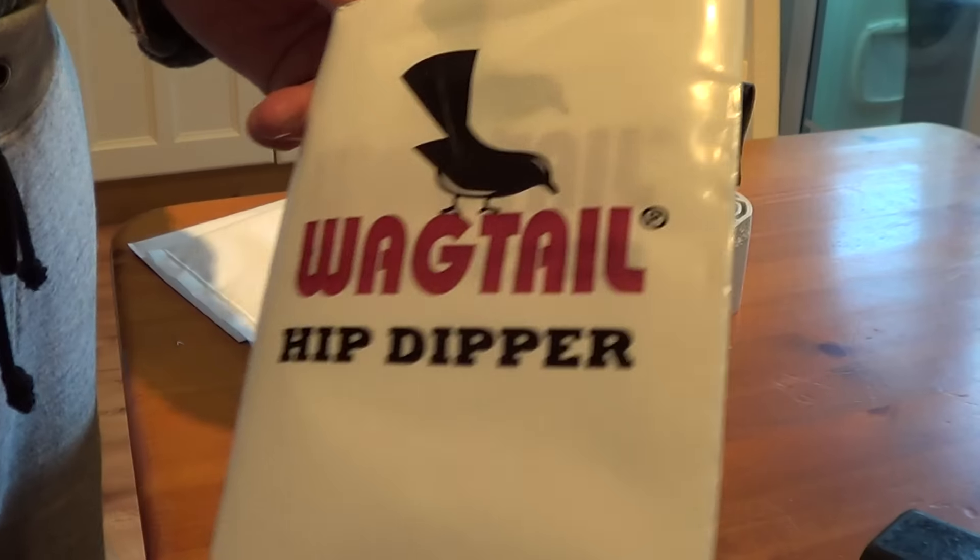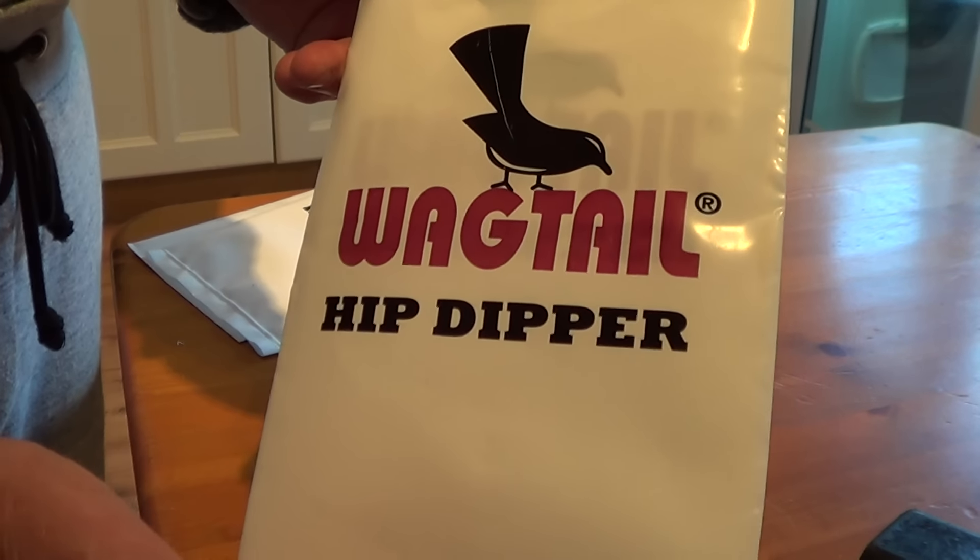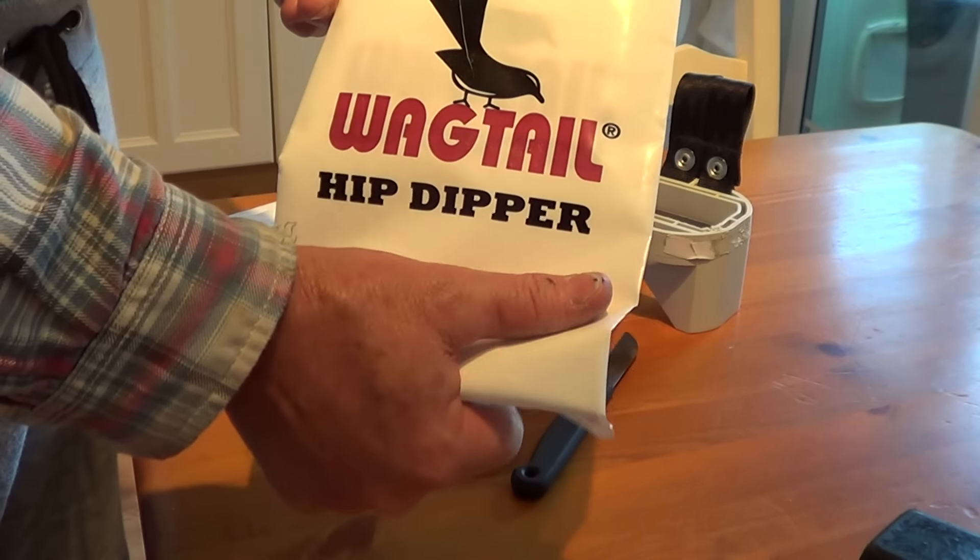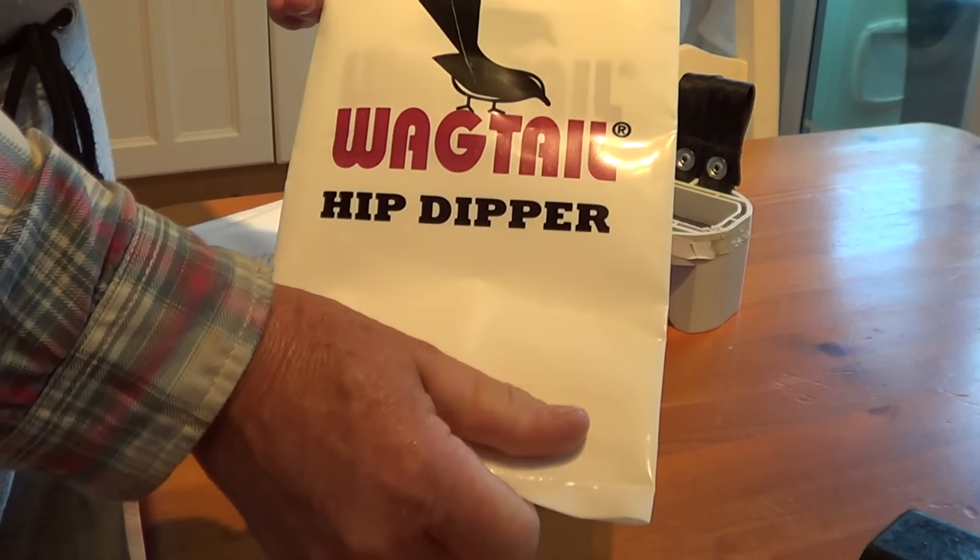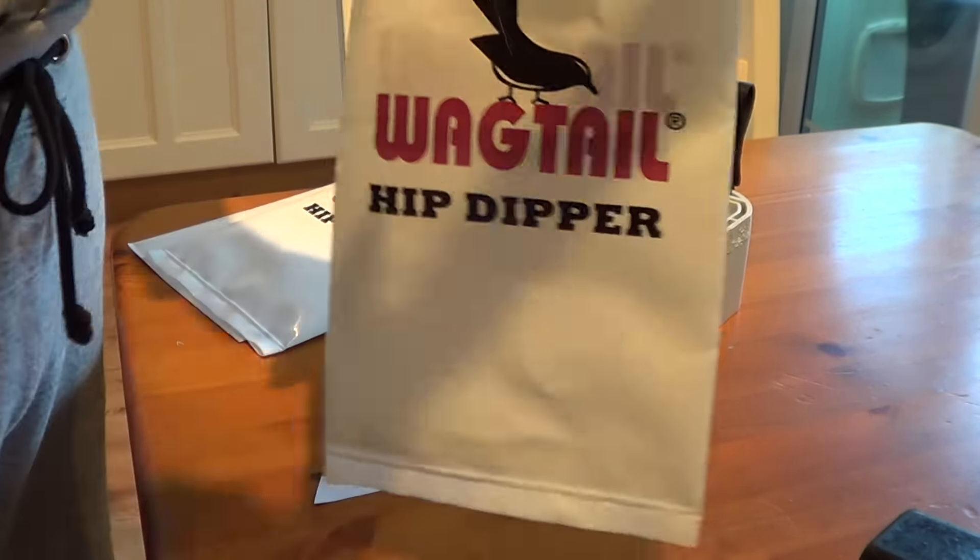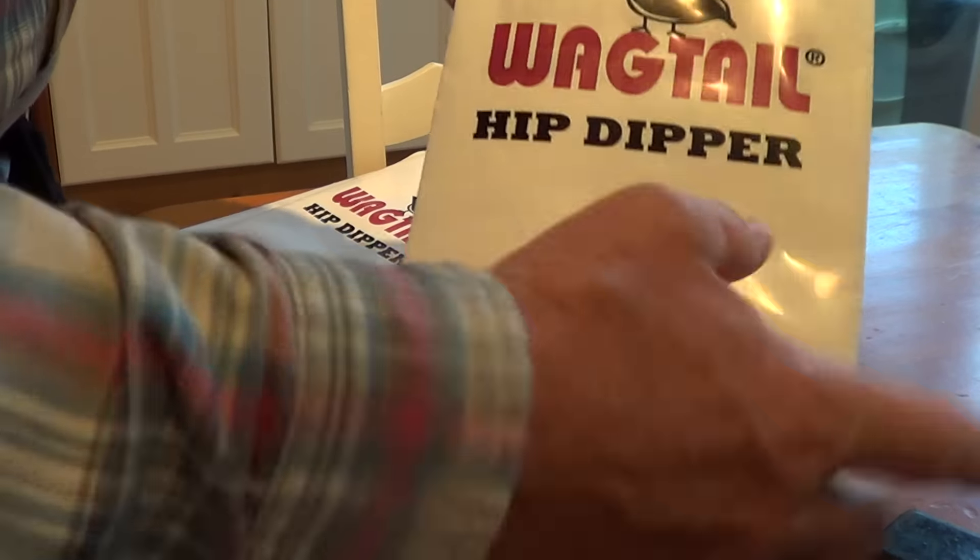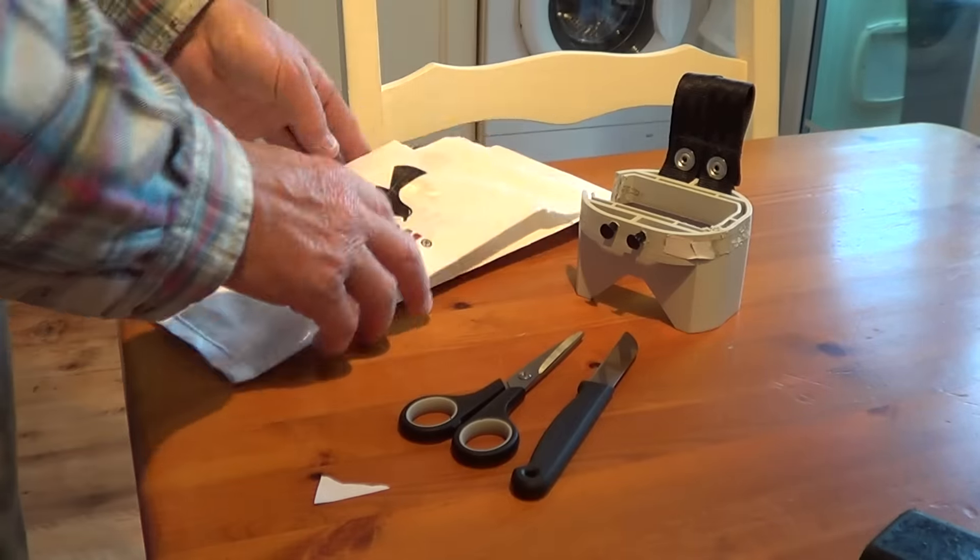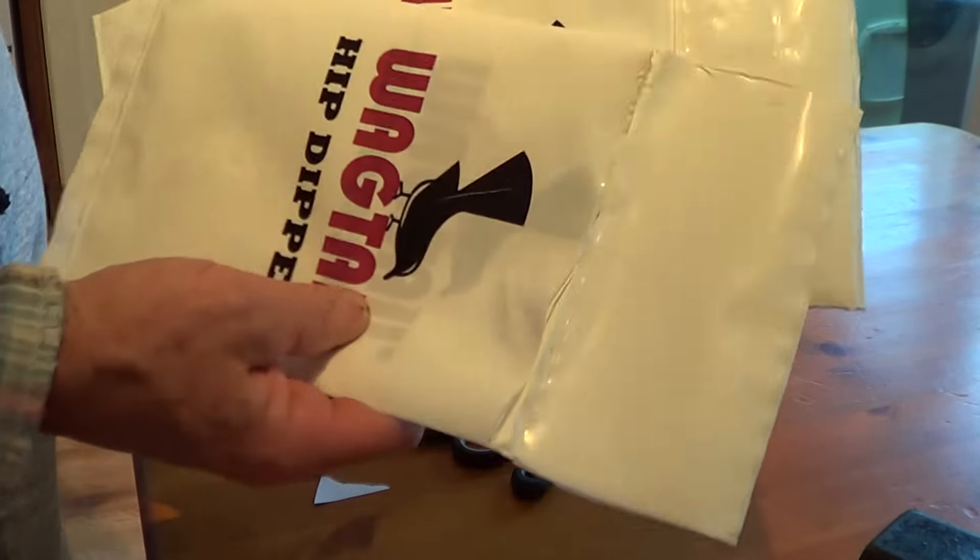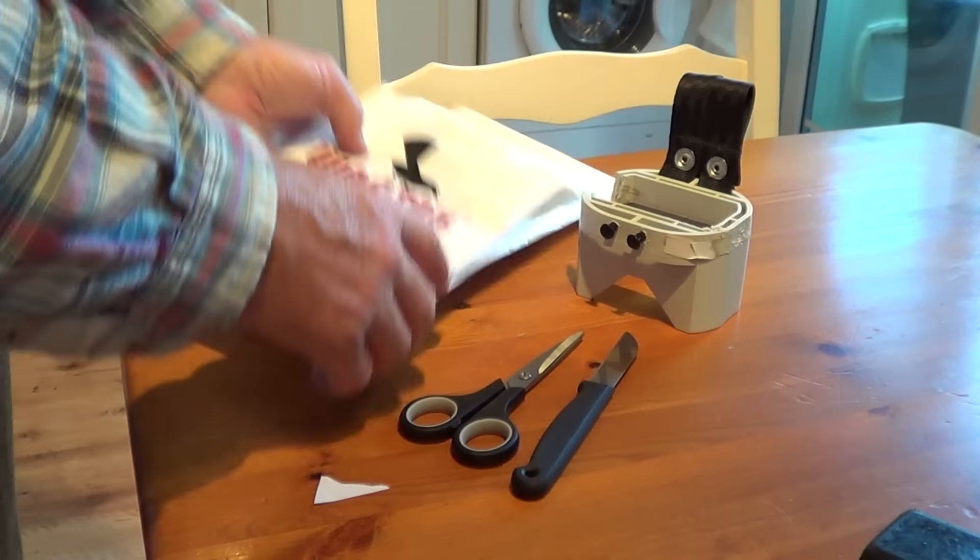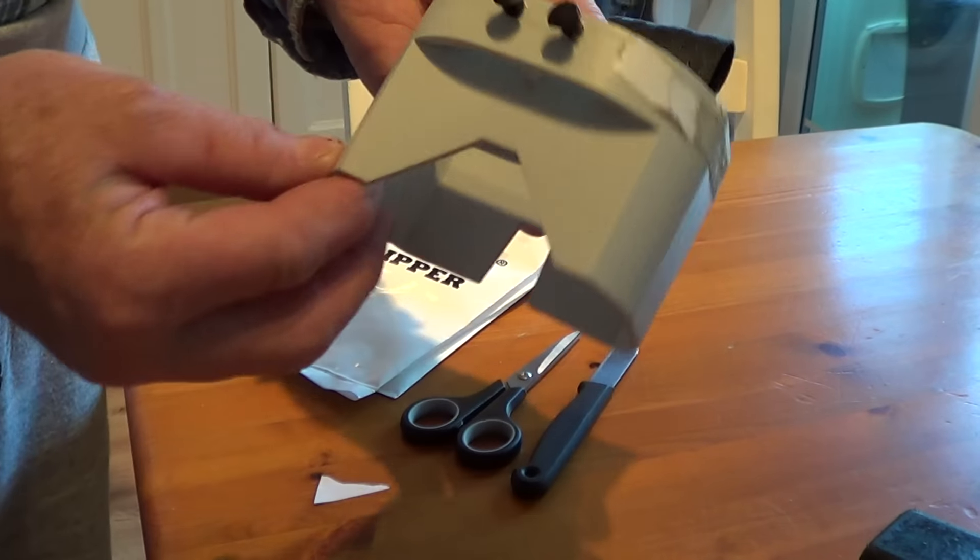If you do use it like a bucket on a belt with water in, you can squeeze it from the bottom to wet your mop. See the Wagtail mop here? But this is not how you use it. A Wagtail hip dipper comes with a sort of framework here.